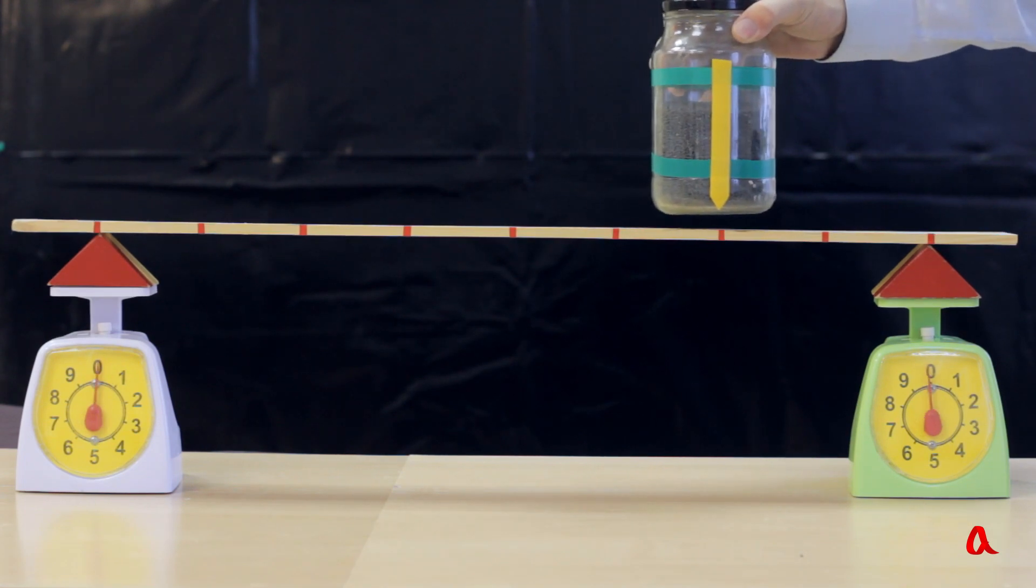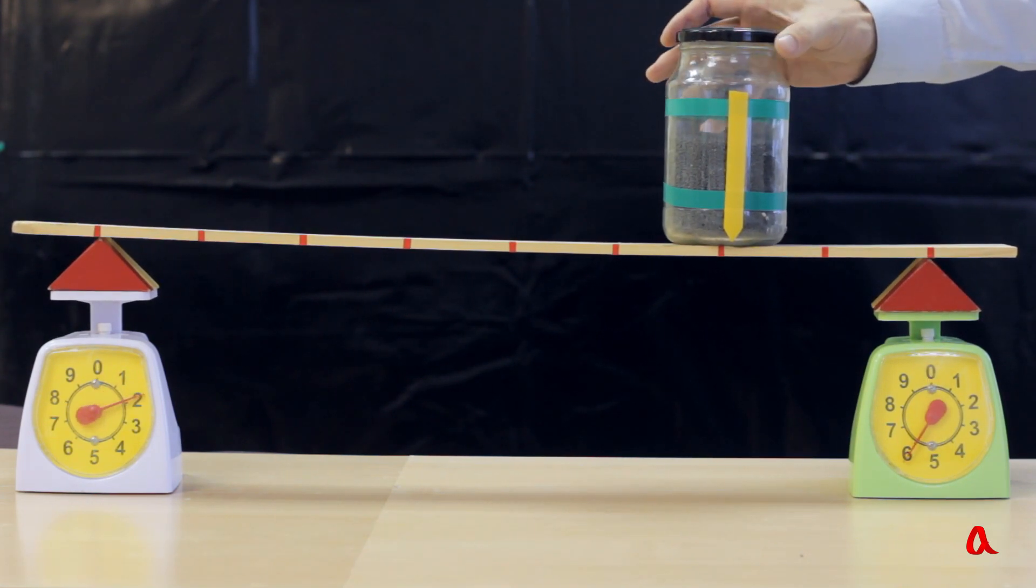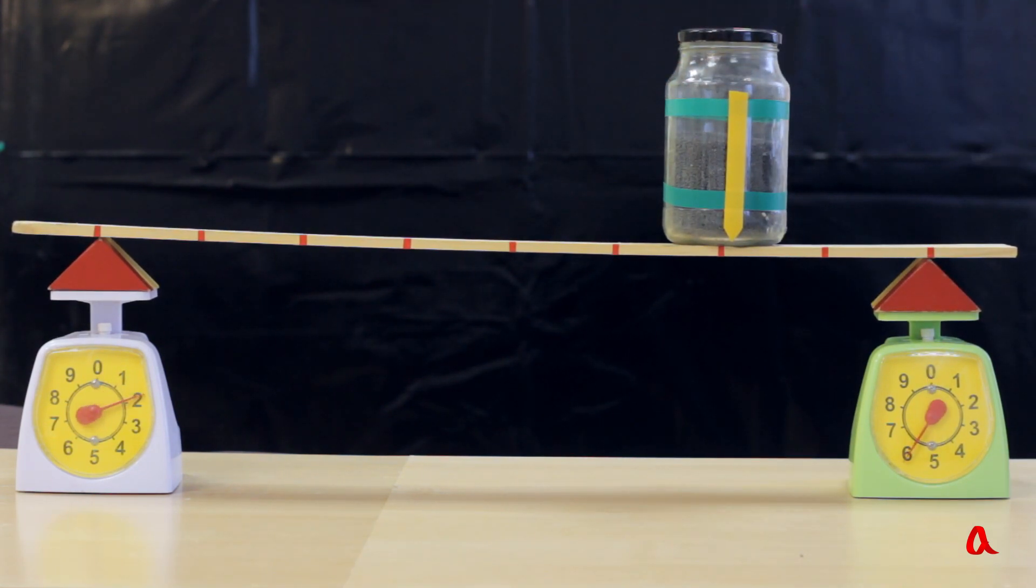If the distance ratio becomes 6 to 2, the supporting points loadings will have a 2 to 6 ratio.